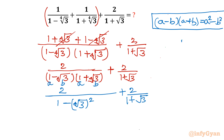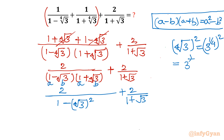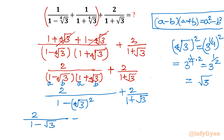Now, the 4th root of 3 whole square is 3 to the power 1 by 4, whole squared. Using the exponent property, we take the product of both powers: 3 to the power 1 by 4 times 2, which gives 3 to the power one half — that is, square root of 3. So this term simplifies to square root of 3, leaving 2 over 1 minus square root of 3, plus 2 over 1 plus square root of 3.